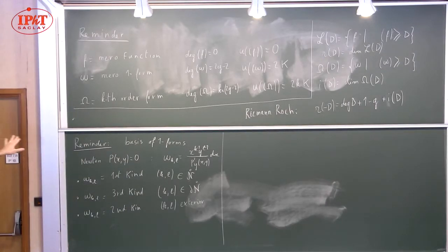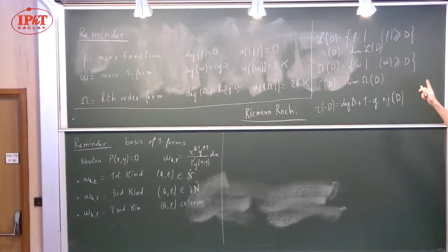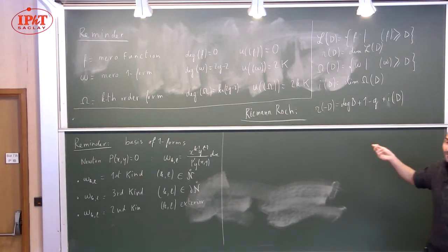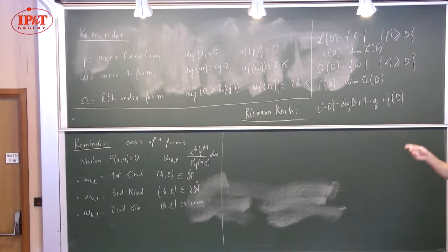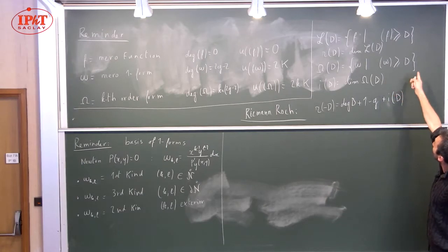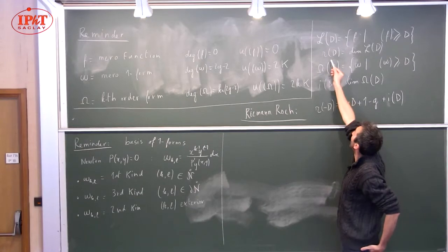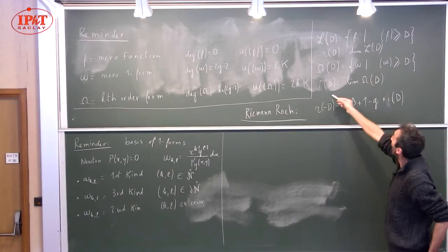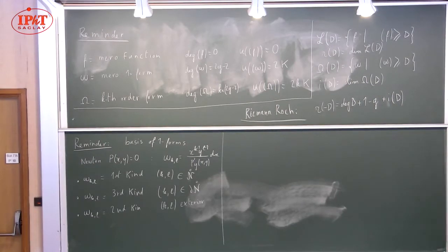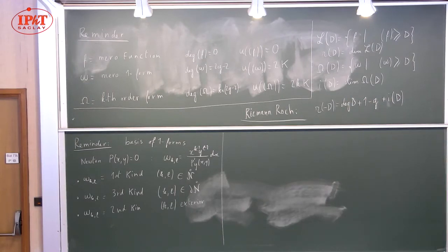Last time I talked about the Riemann-Roch theorem and stated the main result: if you want to find all functions with at least given poles or given zeros, all functions whose divisors are larger than a certain given divisor, or all forms whose divisor is larger than a given divisor. R of D is the index for existence of such functions, and I of D is the existence of such one-forms. There is a beautiful relationship — the Riemann-Roch theorem — saying there is a relationship between the two.